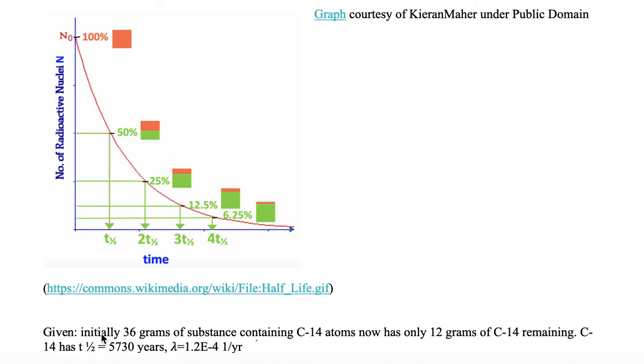We're given initially 36 grams of a substance containing carbon-14 atoms that now only has 12 grams of carbon-14 remaining. We're also given that carbon-14 has a half-life of 5730 years and a decay constant equal to 1.2e-4, inverse years.